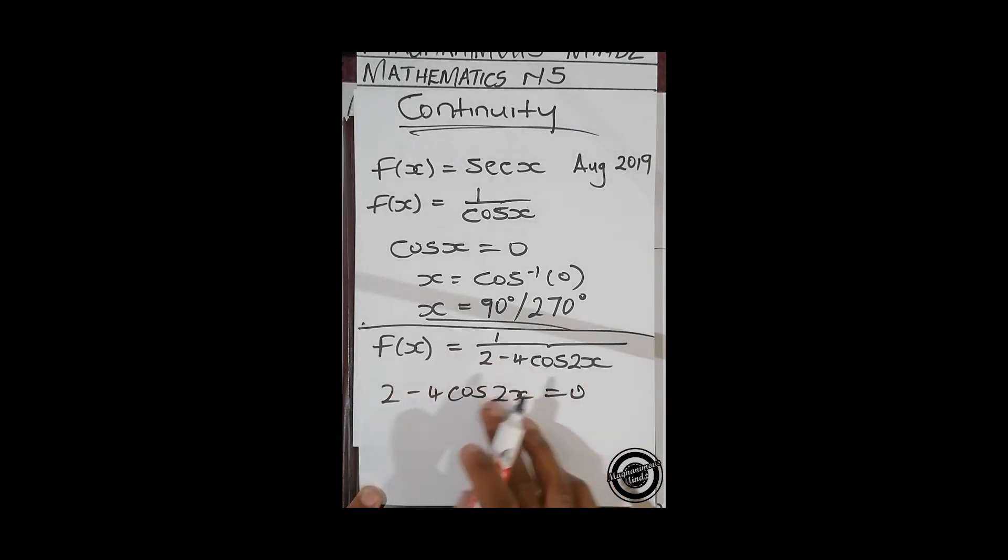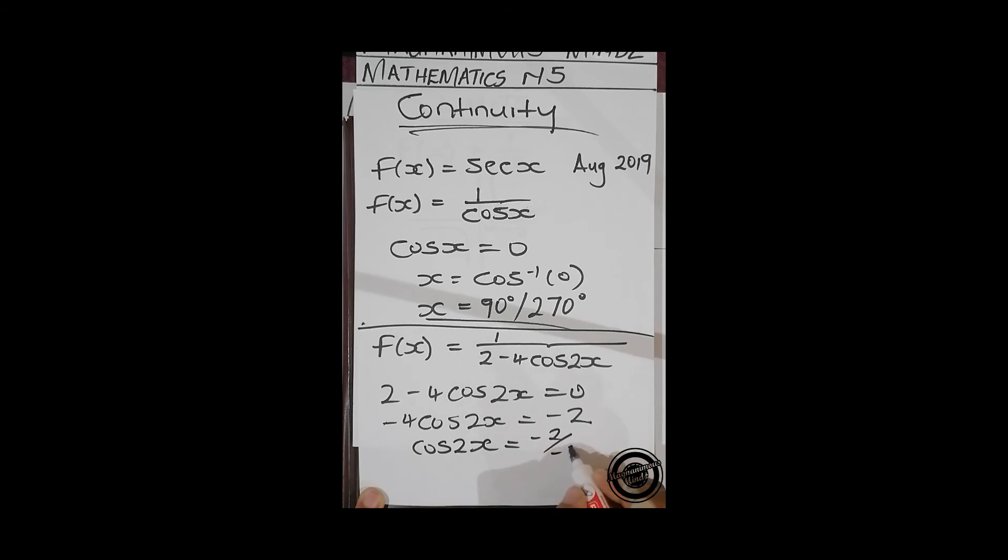So to do that you're going to set 2 minus 4 cos 2x equals to zero, and then you solve for x. You take this to the other side, you're left with negative 4 cos 2x. Cos 2x equals to negative 2 over negative 4.